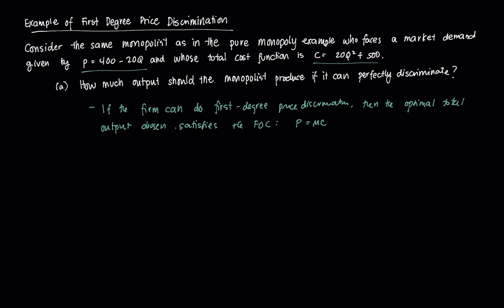If you recall, MC is equal to the derivative of your cost function with respect to Q, and that's 40Q. So that's going to be your marginal cost. Therefore, you just equate your price and your marginal cost. So your price equals 400 minus 20Q equals 40Q. This gives us 400 equals 60Q. Divide both sides by 60, and you get Q star equals 6.67.